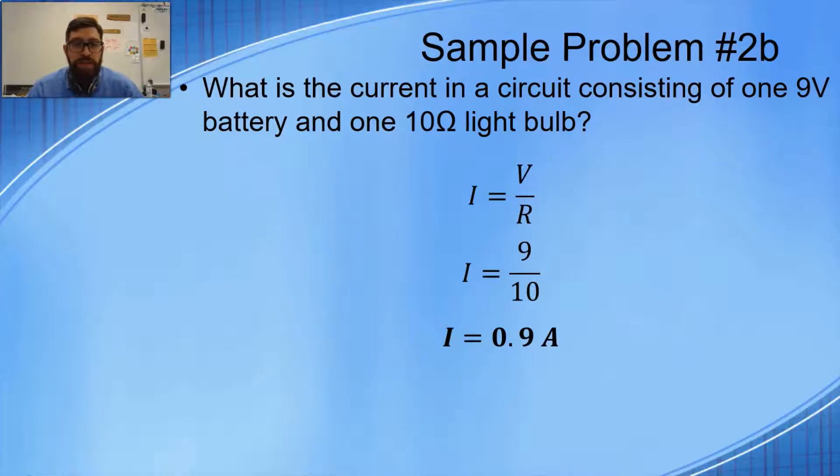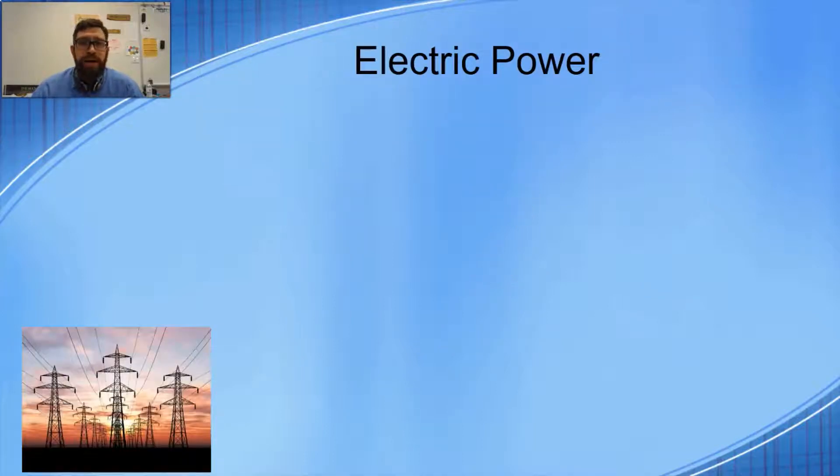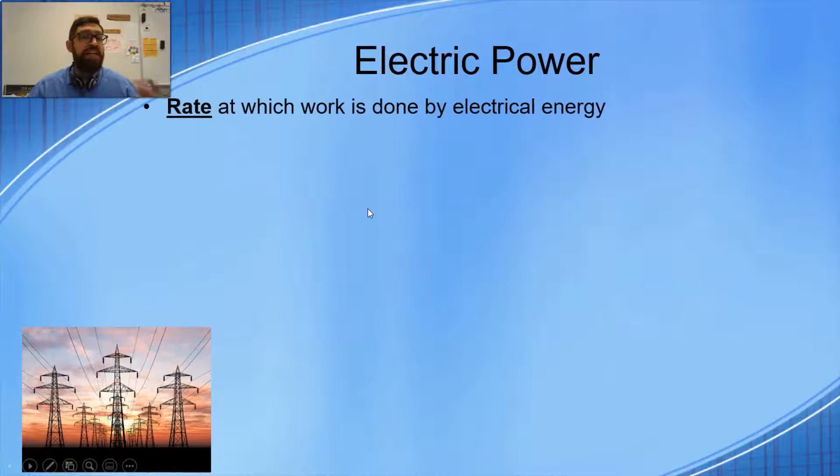Let's move on and talk about something else. Let's talk about power, electric power. Power is the rate at which work is done by electrical energy. We talked about power before, and it's really the same thing. Power is the rate at which any kind of work is done, but now we're specifically talking about electrical power.